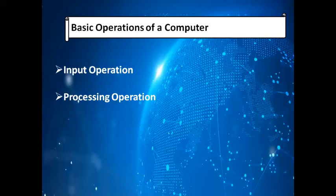The CPU and microprocessor are the processing devices which process instructions — this is called a processing operation. It can perform various tasks: mathematical operations like addition, subtraction, multiplication, and division, and logical operations like comparison, and AND, OR, NOT operations.